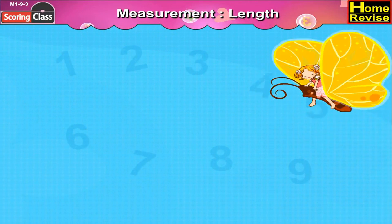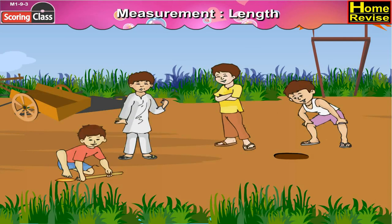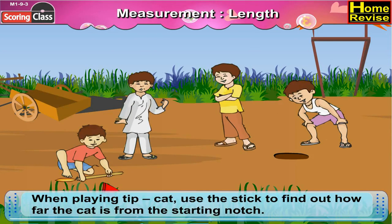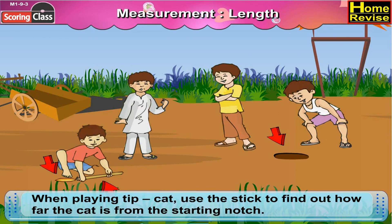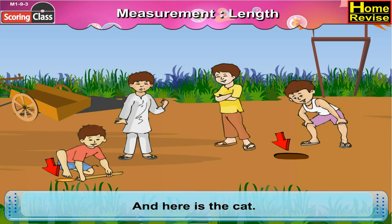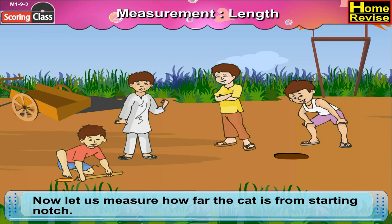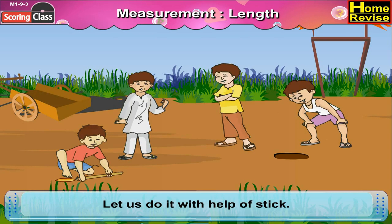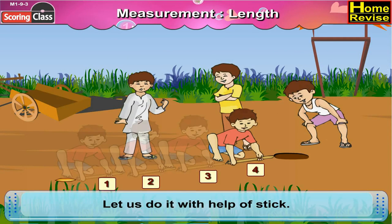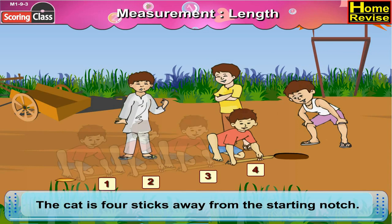Measurement: length. Hey kids, have you ever played tip cat? It's an interesting game — let's play it together! When playing tip cat, use the stick to find out how far the cat is from the stopping notch. Here is the stopping notch and here is the cat. Let us measure how far the cat is from the stopping notch: one, two, three, four. The cat is four sticks away from the stopping notch.